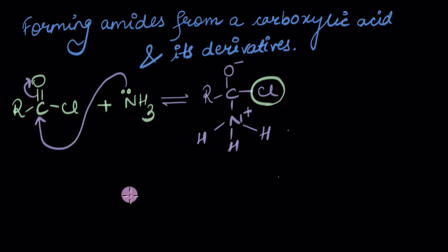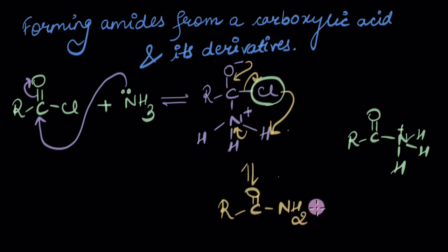What we really want is this chloride to leave. But if it does, we'll get something that looks like this. I don't think this is stable, do you? There's a positive charge on nitrogen. So what really happens is while leaving, this chloride ion tends to take a proton from this nitrogen so that we eventually get the required amide and HCl.